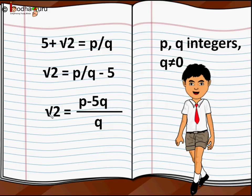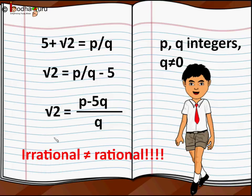But left-hand side is square root of 2, which is an irrational number—we just proved it. So this is not possible. Irrational number cannot be equal to a rational number. So the reason of this conflict is a wrong assumption. This means 5 + √2 is not a rational number.